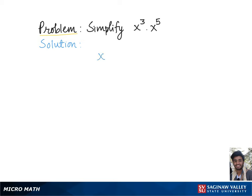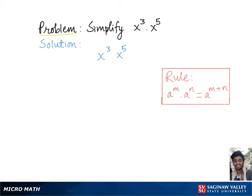To simplify x to the cubed times x to the fifth, let's go over a rule: whenever we have two or more expressions with the same base multiplied by each other, we simply add the exponents together. Here in our problem, we have two expressions with the same base x multiplied by each other. So, upon simplifying this, we get x to the 3 plus 5, which is equal to x to the eighth.